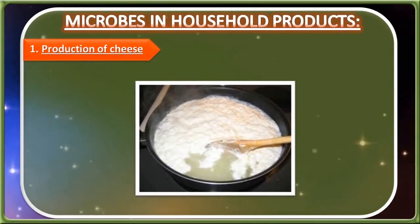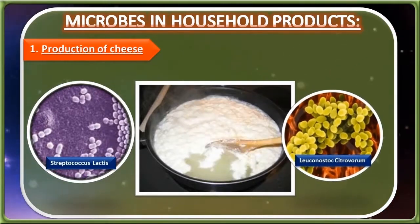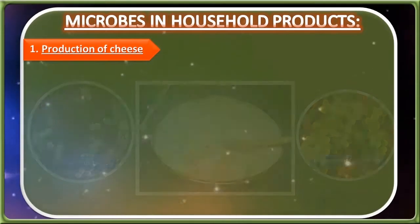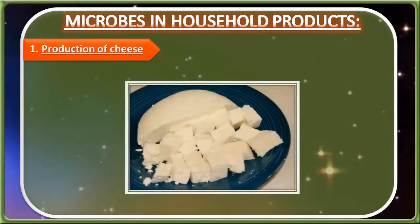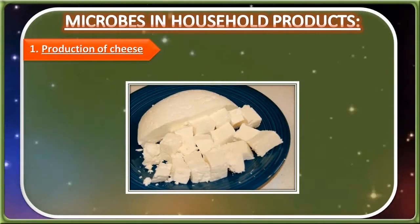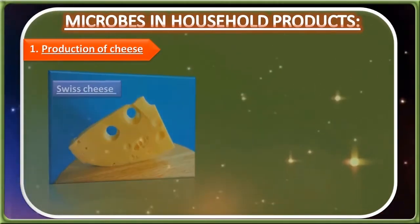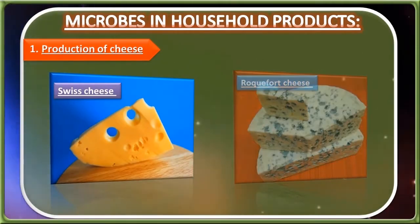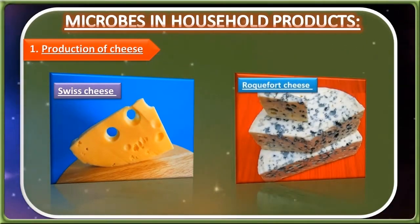Cheese is a nutritive product produced by curdling and ripening of milk. Curdling is done by bacterial strains like Streptococcus lactis and Leuconostoc citrovorum, while ripening of solid curd is done by different bacterial strains which provide characteristics, texture, flavour, and taste to the cheese. Depending upon the ripening process, there are about 400 types of cheese. Swiss cheese is ripened by the bacterium Propionibacterium sharmanii, which produces CO2. Roquefort cheese is ripened by a specific fungal species which provides a specific flavour to it.